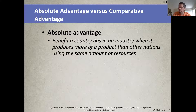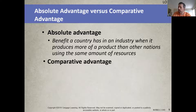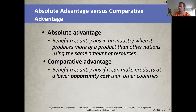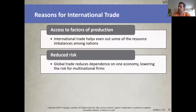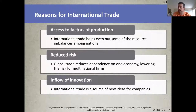Companies usually think of expanding into global markets when they realize there is a new, unexplored, and growing market to be exploited — but there are other benefits too. International trade is advantageous to firms that want to capitalize on factors of production not present in the right amount or at the right price in a particular country. Global trade helps reduce dependence on one economy, which reduces economic risk for multinational companies. International trade also promotes innovation and is an invaluable source of new ideas.